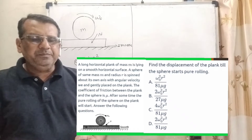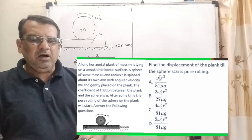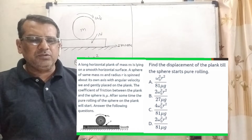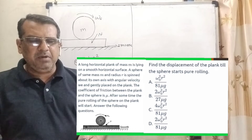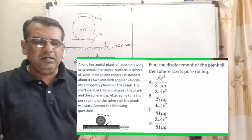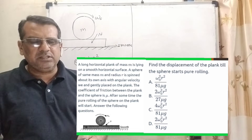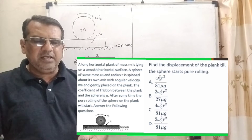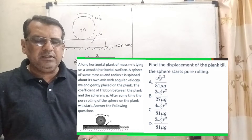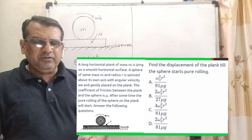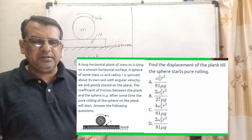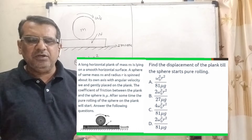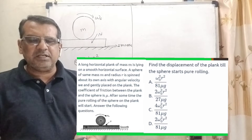Now here is the question. A long horizontal plank of mass m is lying on a smooth horizontal surface. A sphere of same mass m and radius r is spinned about its own axis with angular velocity omega, and gently placed on the plank. The coefficient of friction between the plank and the sphere is mu. After some time, the pure rolling of the sphere on the plank will start. Find the displacement of the plank till the sphere starts pure rolling.